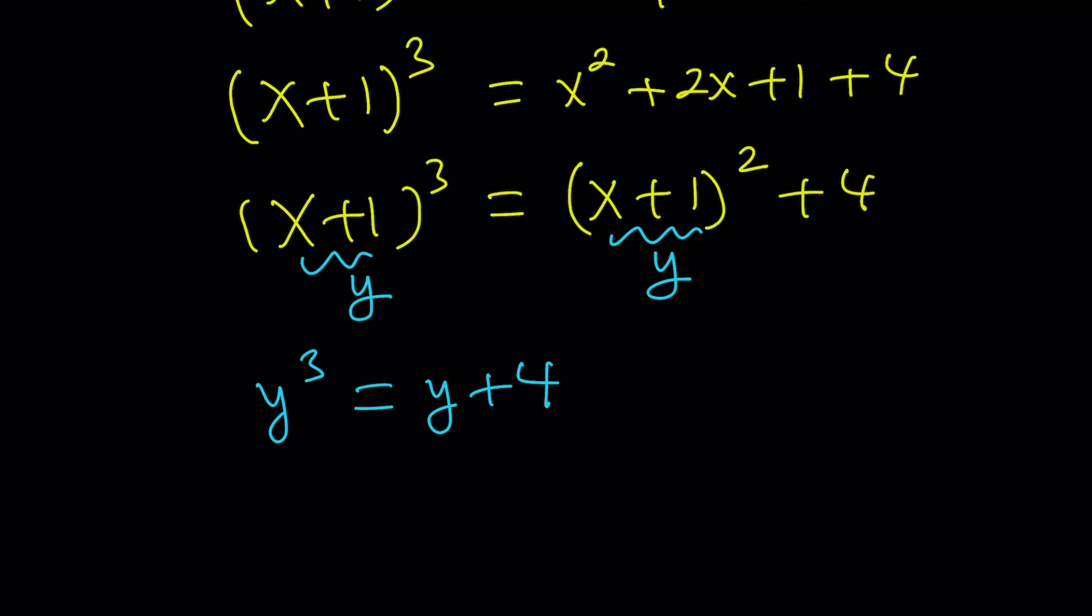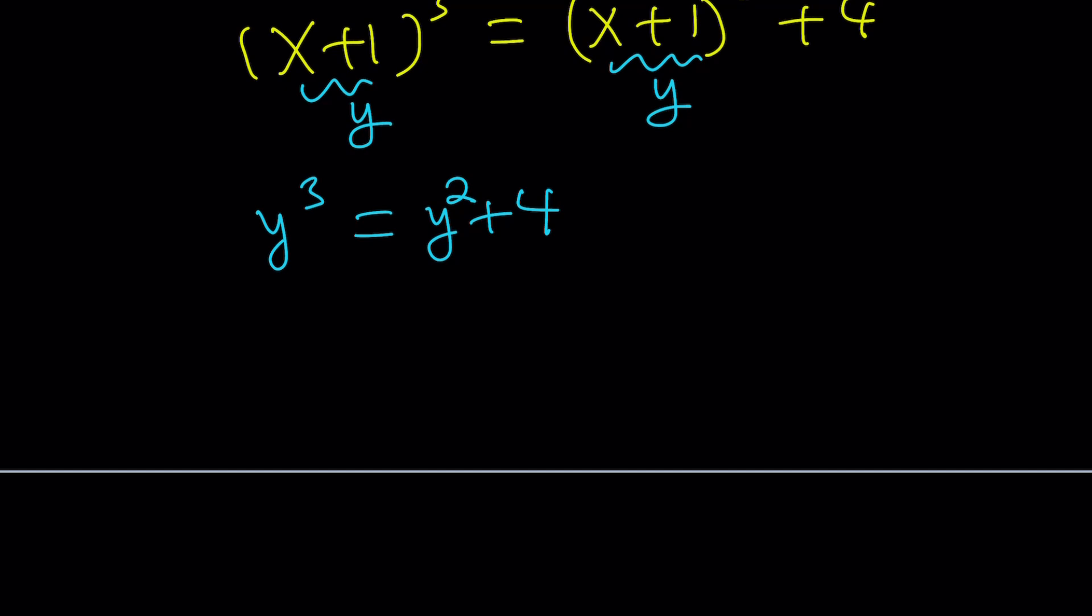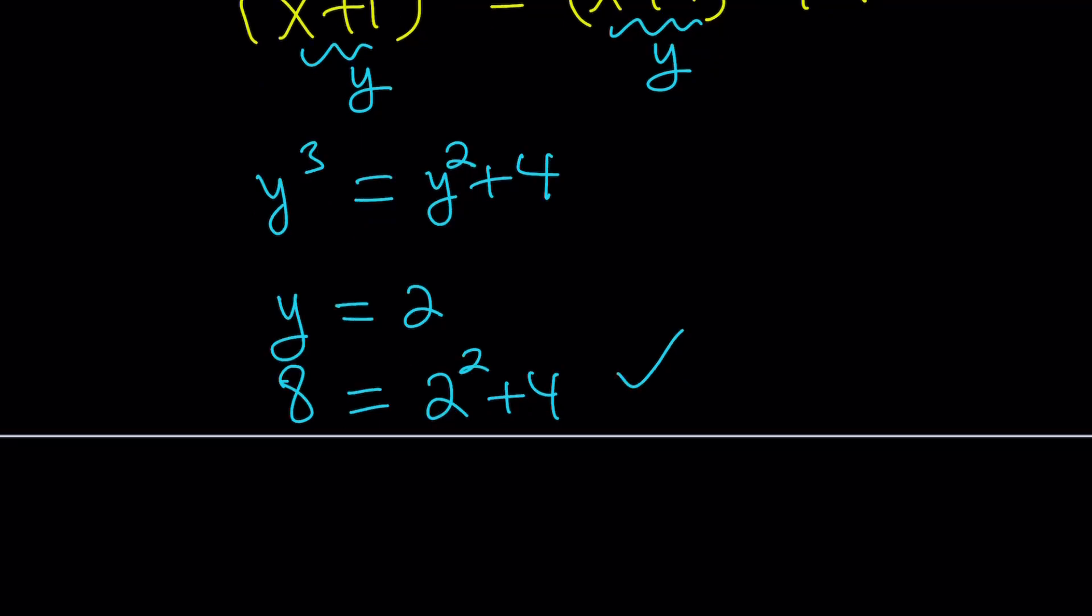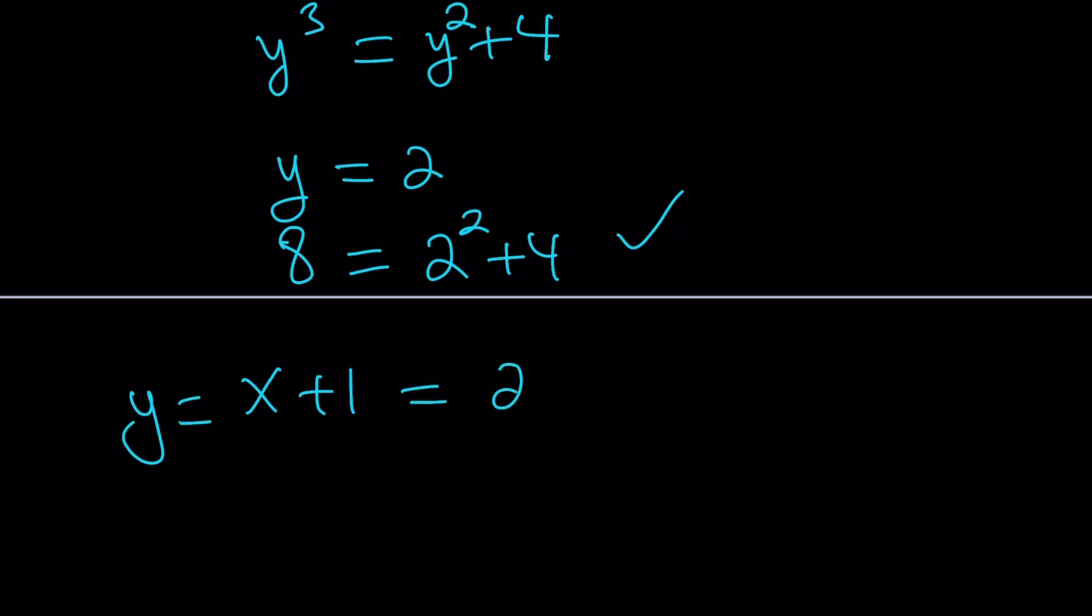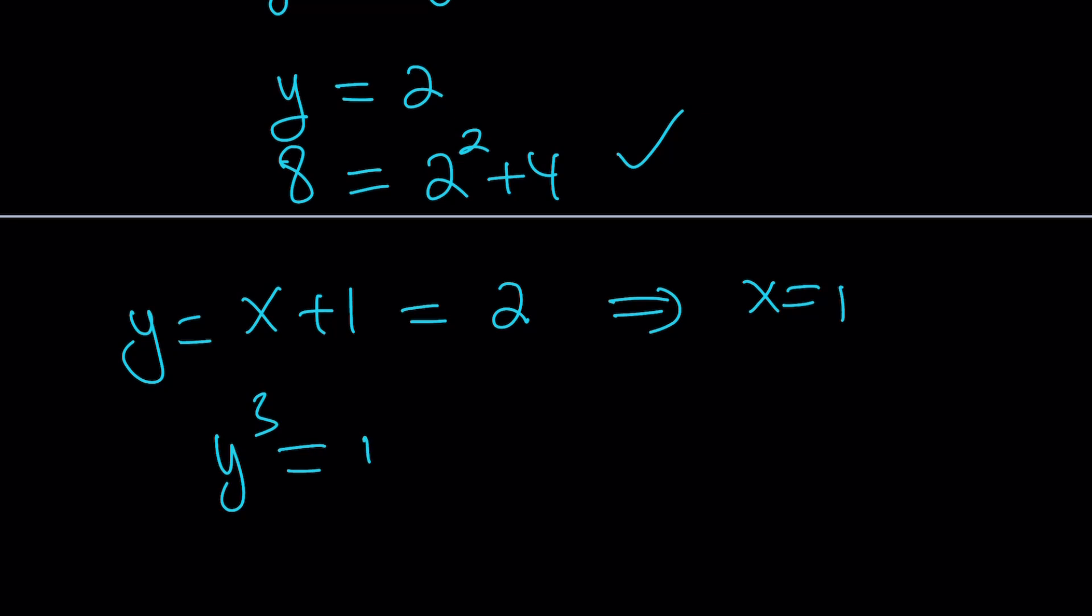This is going to give us y cubed equals y squared plus 4. At this point hopefully you do get an easy solution. Think about some integer that would satisfy. Since my constant is 4 or negative 4, by using the rational root theorem I would go for 1, 2, or 4 as a candidate. 1 doesn't work. 2 works because y equals 2 gives us 8 equals 2 squared plus 4 which is 8. That means y equals 2 is a solution but x plus 1 equals y, so y equals x plus 1 equals 2. From here x equals 1 and then you can just proceed with the same method or there are always alternatives.